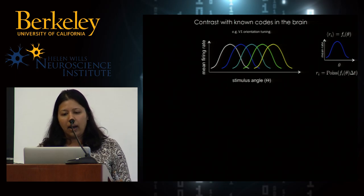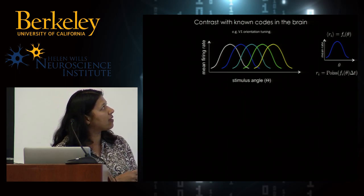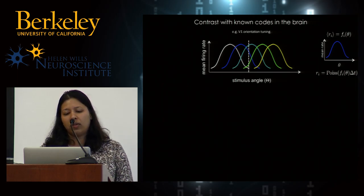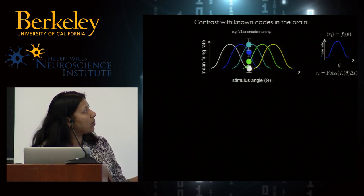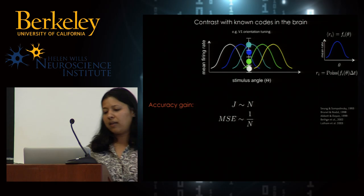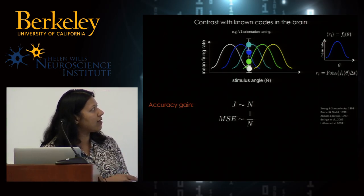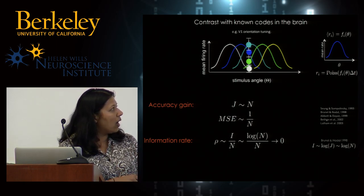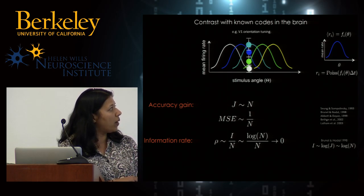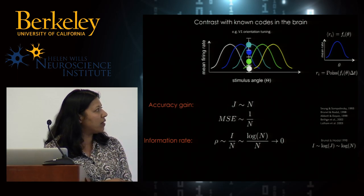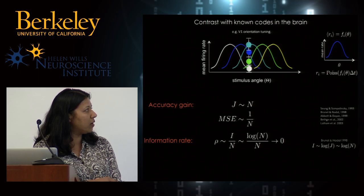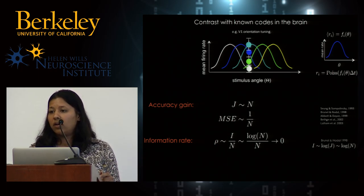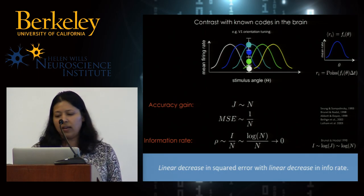To contrast with known codes in the brain: in a conventional code like orientation tuning in V1, each neuron has a tuning curve and fires Poisson spikes. The Fisher information of these codes scales like n, the mean squared error scales like 1/n, and the information rate — the log of information bits versus the number of bits used — goes like log(n)/n, which itself goes to zero. So conventional neuroscience codes have information rates that go to zero; they have a linear decrease in squared error at the cost of a linear decrease in information rate.